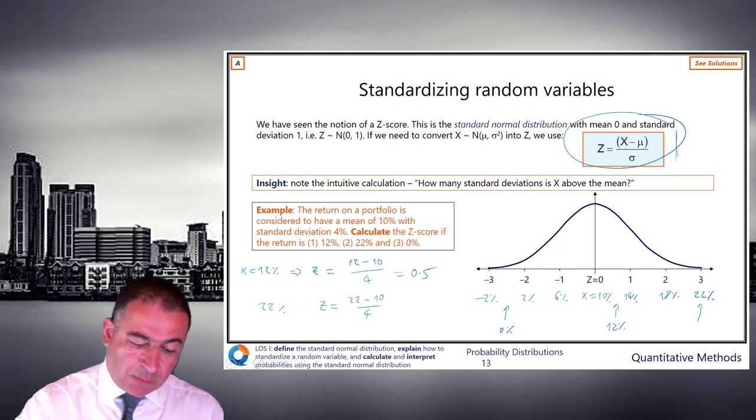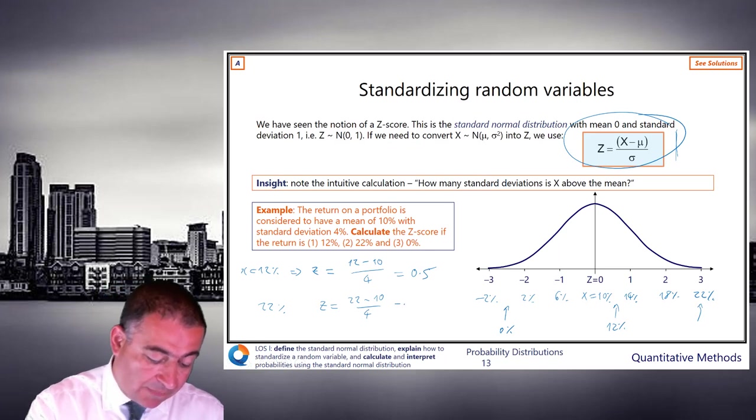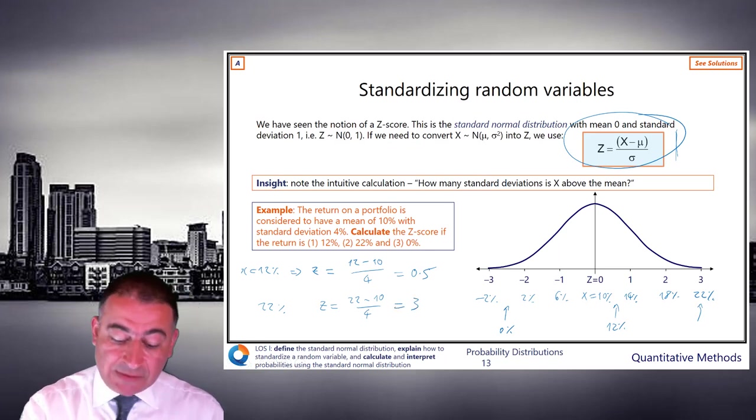And so here, z equals 22 minus the mean of 10 divided by 4. And that gives us 3, which exactly ties in with what we've got up here.